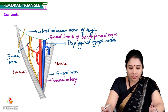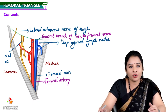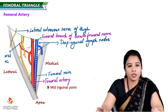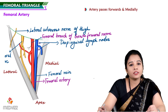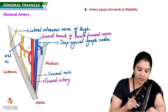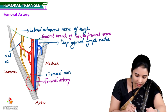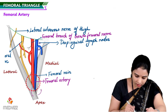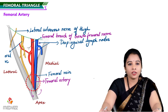The beginning of the femoral artery is at the mid-inguinal point and it runs vertically downwards towards the apex, passing forwards and medially. It lies lateral to the femoral vein at the base. At the apex, the artery becomes anterior and the femoral vein goes towards the posterior side. That is the relationship between the femoral artery and femoral vein.